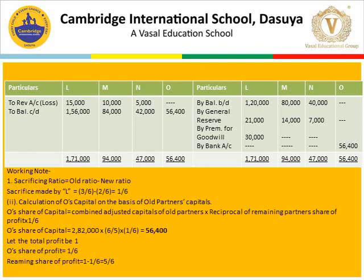By bank account: in O's capital, we record the capital brought in by the new partner, calculated through the working note. Sacrificing ratio: old minus new. L's sacrifice = 3/6 − 2/6 = 1/6. This is the sacrifice made by L, confirming the entire premium for goodwill goes to L.